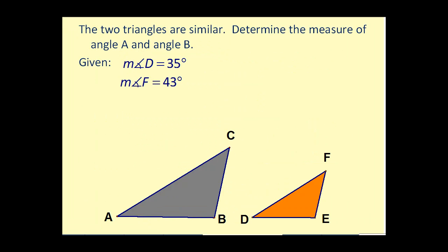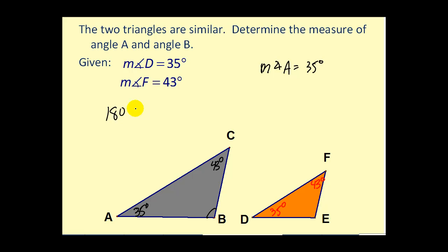Let's look at a problem. The two triangles are similar — determine the measure of angle A and angle B. We know angle D is 35 degrees and angle F is 43 degrees. Since the triangles are similar, corresponding angles are congruent, so angle C is also 43 degrees and angle A is 35 degrees. To find angle B, we take 180 minus 35 minus 43, giving us 102 degrees. So the measure of angle B equals 102 degrees.